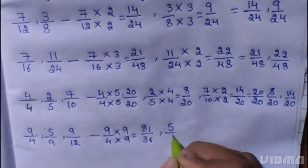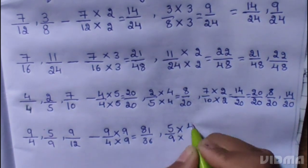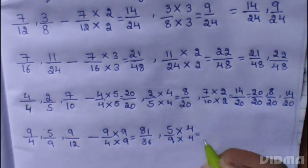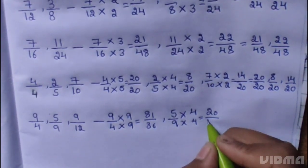5 by 9. 5 multiplied 4, 9 multiplied 4. 5 times 4 is 20, 9 times 4 is 36.